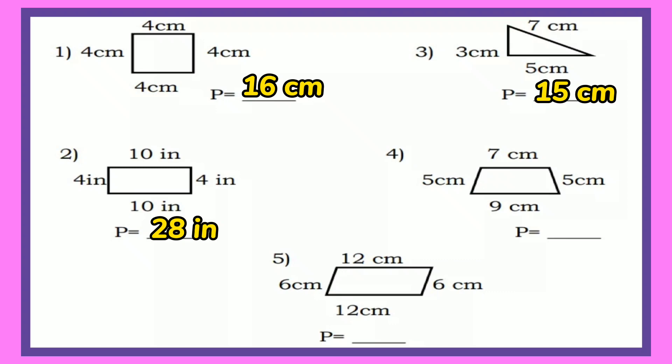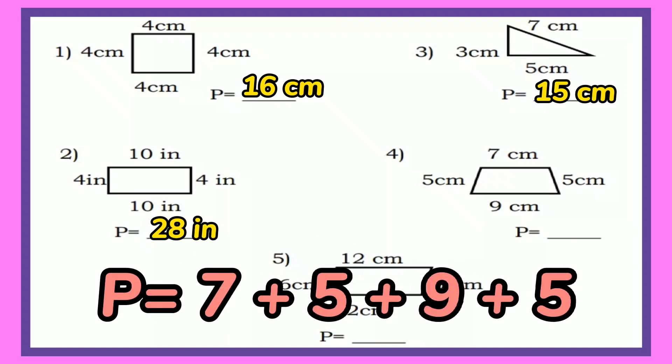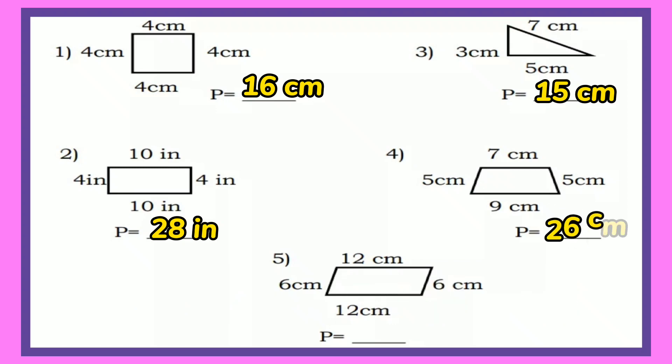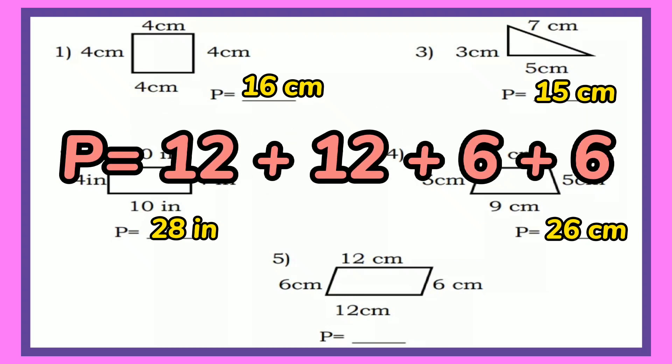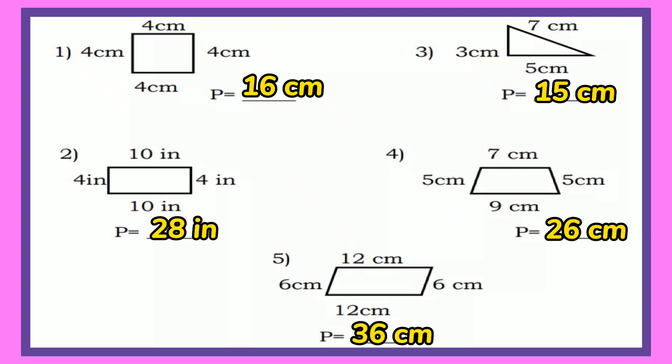Number 4: 7 plus 5 plus 9 plus 5 and the perimeter is 26 centimeters. And for number 5: 12 plus 12 plus 6 plus 6 and the perimeter is 36 centimeters.